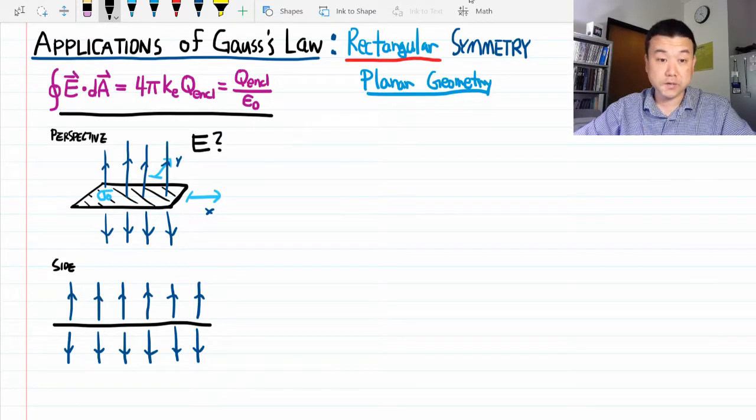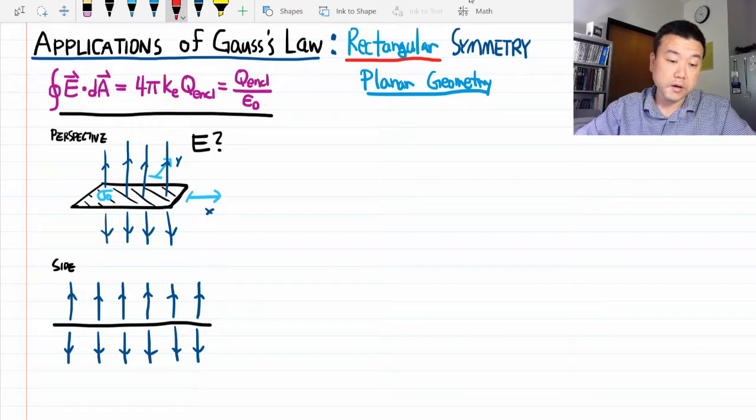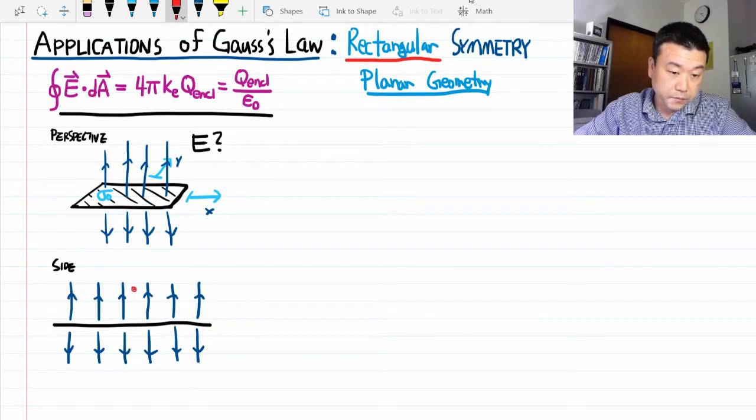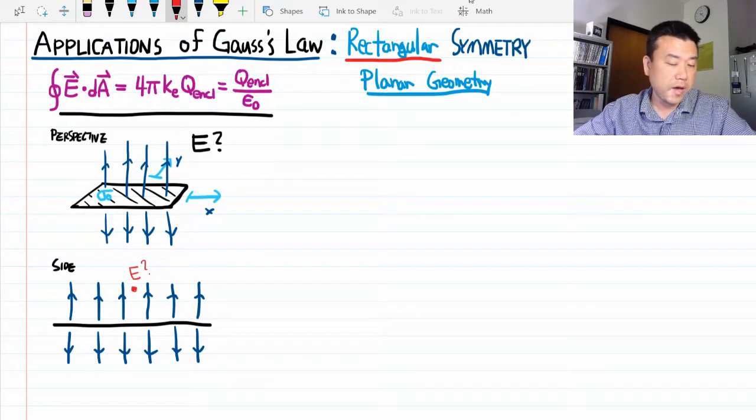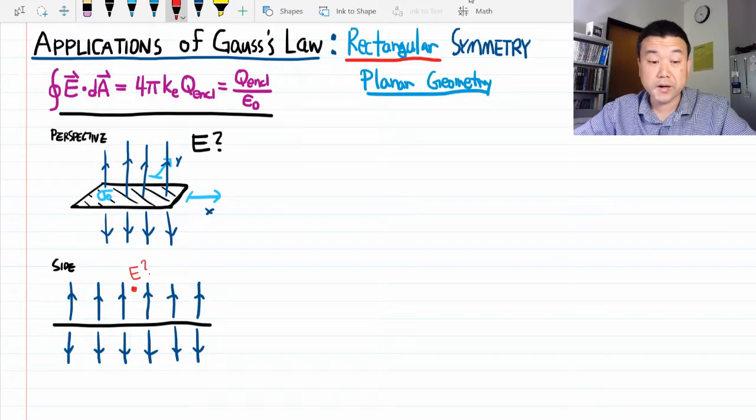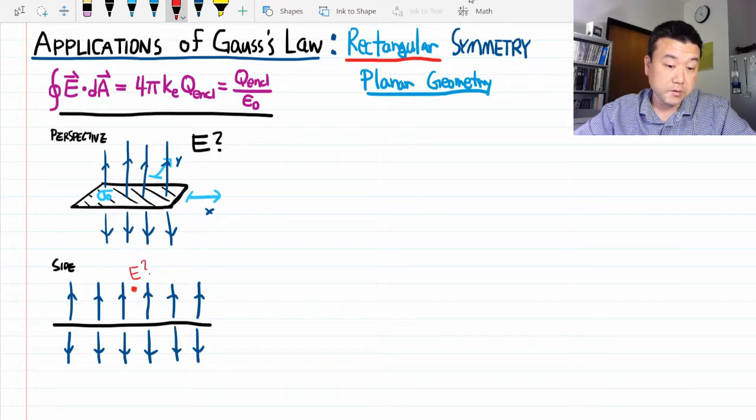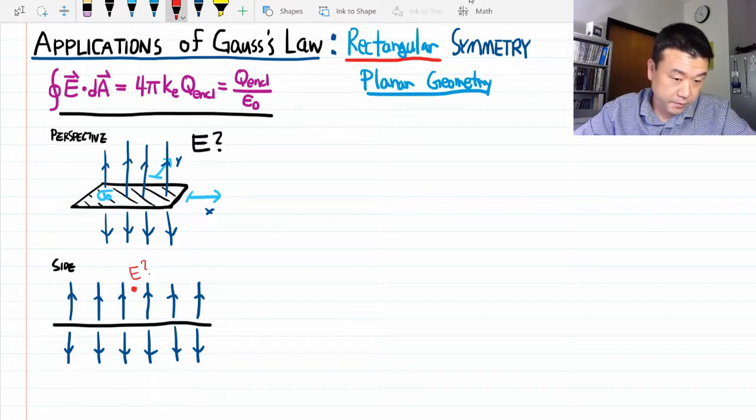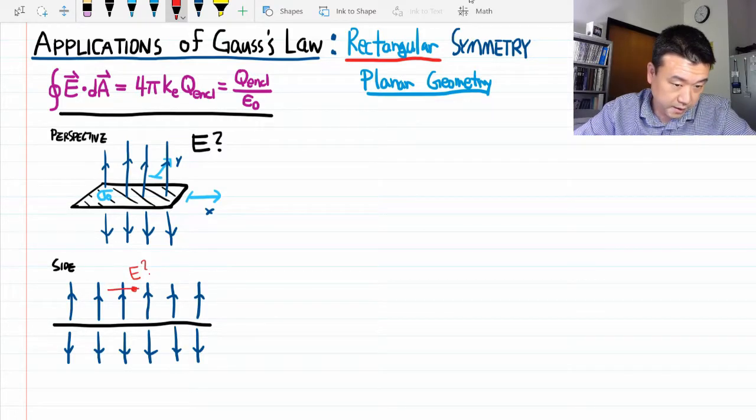we need to define a Gaussian surface. So let's say we are looking at a point here. We are looking at what is the electric field at this point. And since we have a rectangular symmetry, we are going to need to pick a rectangular surface. So from this side view,